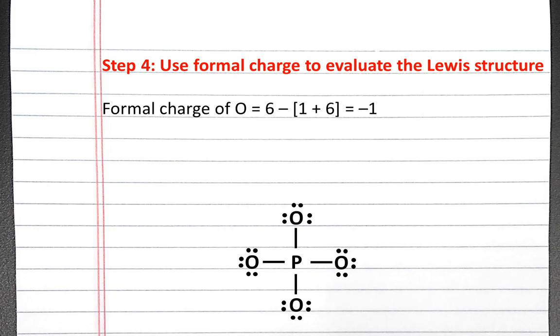We can calculate the formal charge of the oxygen atoms. Oxygen has six valence electrons in a neutral atom, and each oxygen atom has one bond plus six lone pair electrons. So the formal charge of oxygen is 6 subtract 1 plus 6, which is negative one.